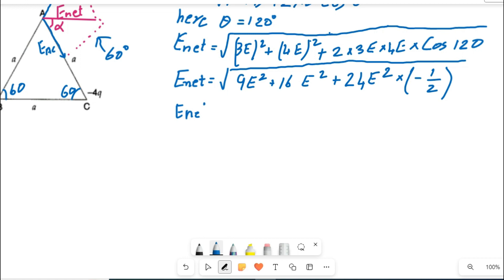Just do the addition of them. So it equals square root of 9 plus 16, so 25E square, plus you can cancel that 2 and 24. So the result will be 12E square but it will be minus.